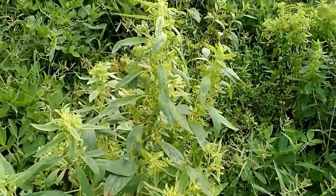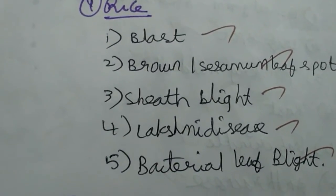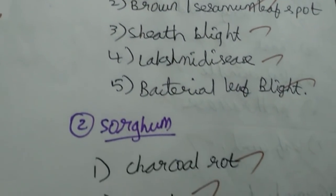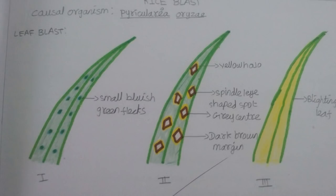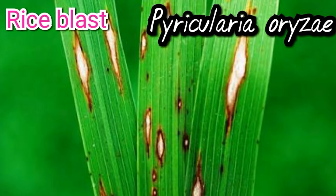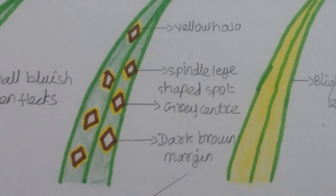We will see the first diseases of rice. In rice, we have a major disease — blast. This is blast disease. It has a diamond-shaped lesion on the leaf. The center of the lesion is a silver color. This blast disease causes maximum rice yield loss.